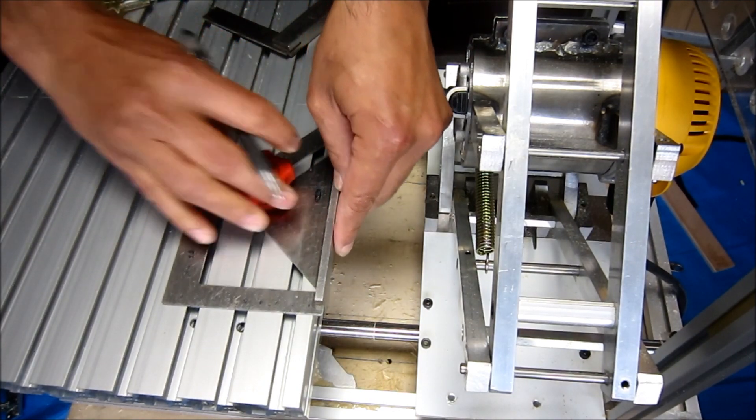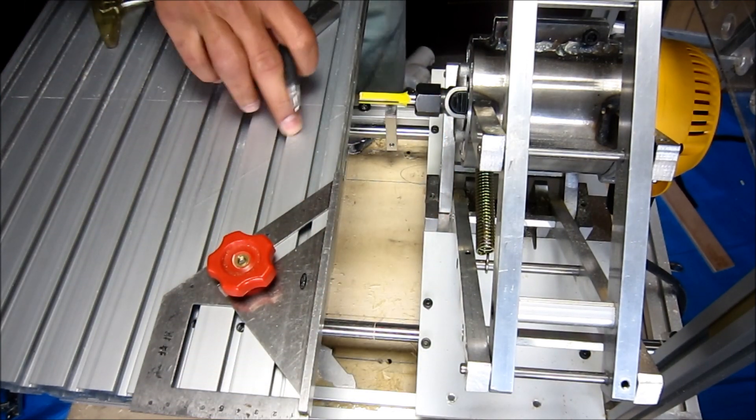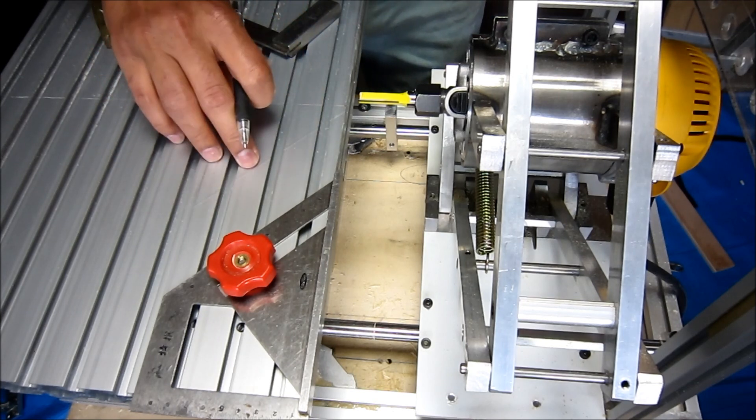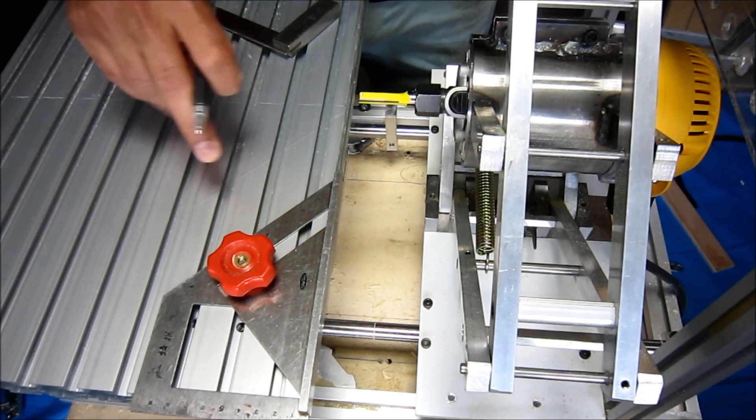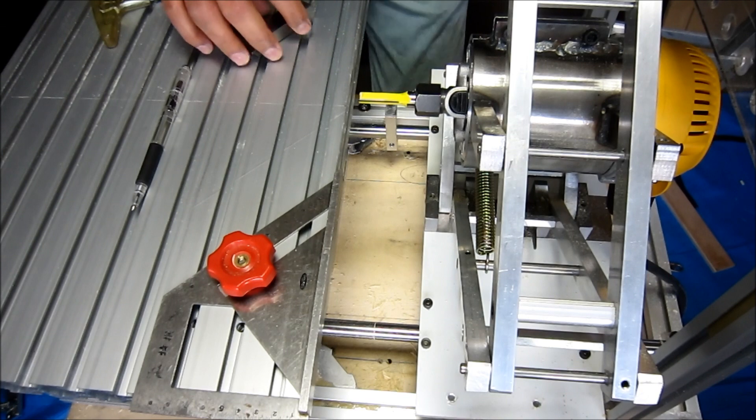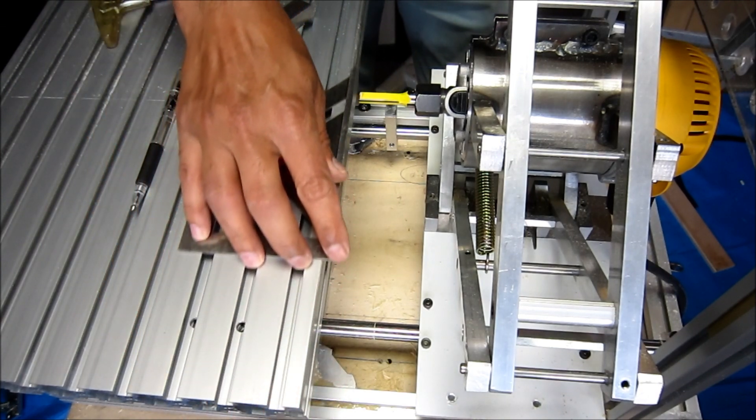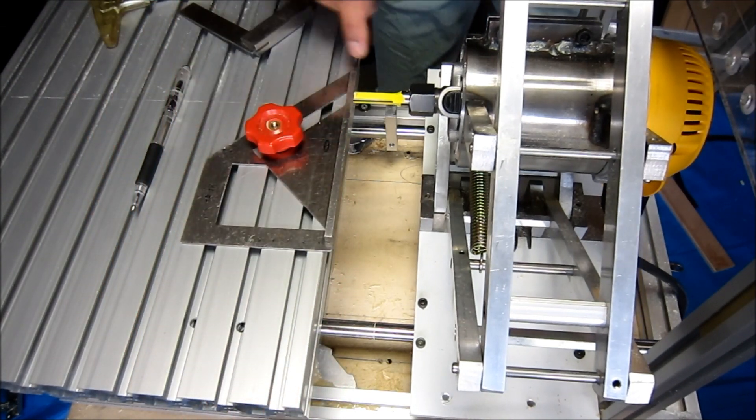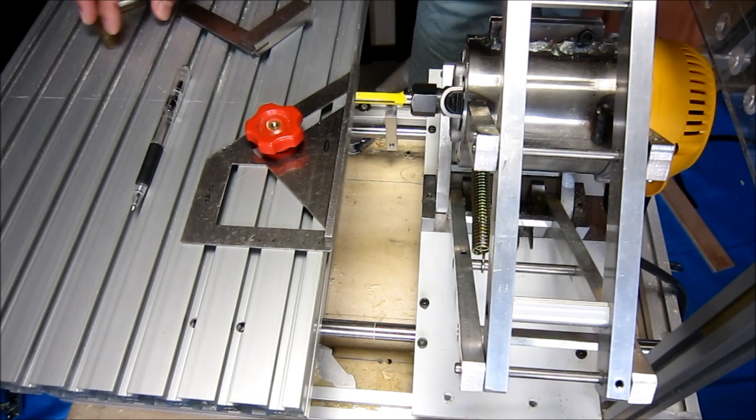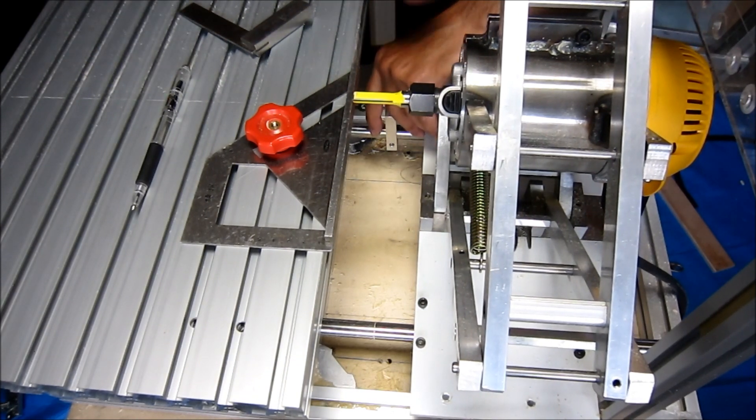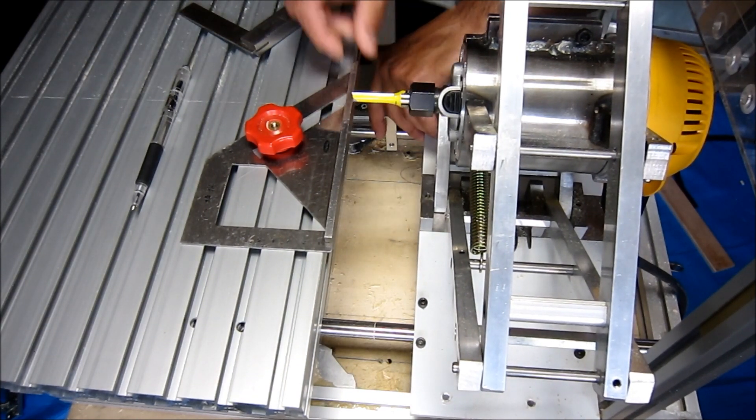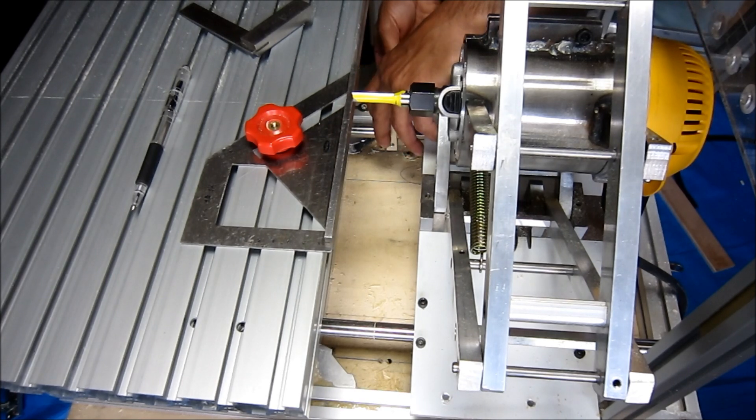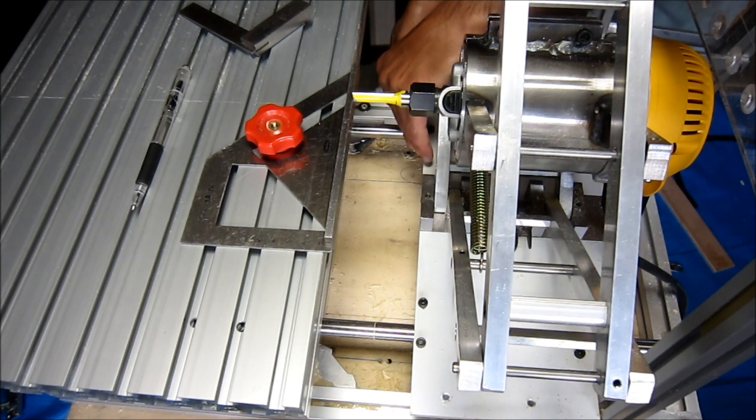So this mark line will determine your mitre center. Next thing we have to do, bring this and then bring the root of it exactly to this place here, like this way, and then lock.